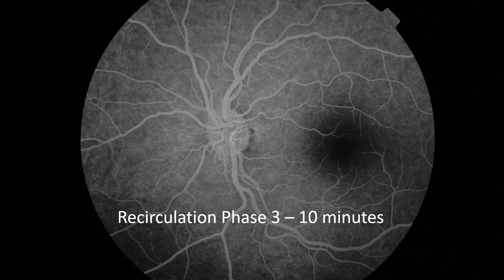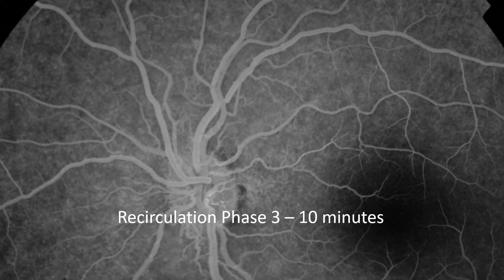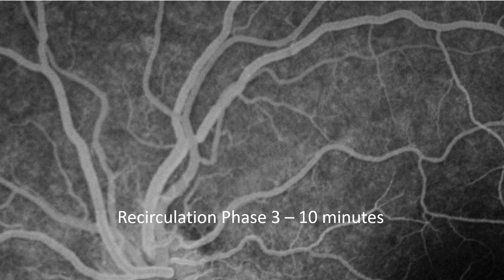The recirculation phase lasts from about 3 to 10 minutes. During this phase, fluorescence in the arteries continuously fades while fluorescence in the veins progressively increases before gradually fading out. At this stage, the artery appears less bright compared to the vein, which remains brighter.